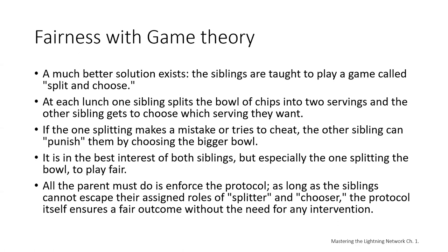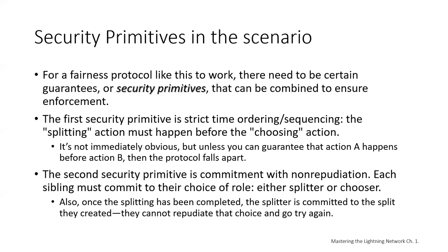The parent can't play favorites or distort the outcome. For a fairness protocol like this to work, there need to be certain security guarantees, which we call security primitives. These security primitives can be combined to ensure enforcement. The first security primitive in this scenario is strict time ordering or sequencing — the splitting of chips happens before you choose which bowl you get. Unless you can guarantee that action A happens before action B, the protocol falls apart.